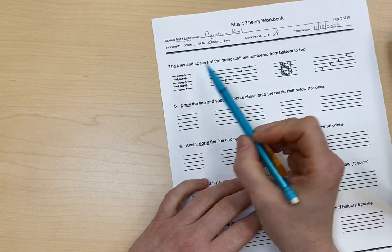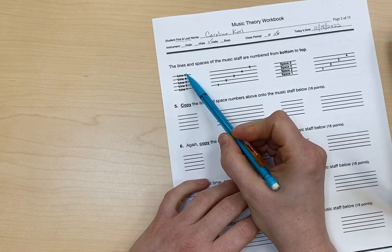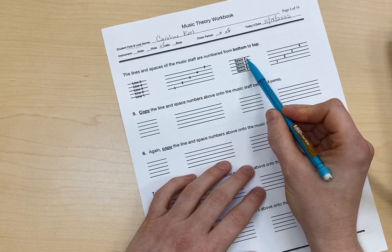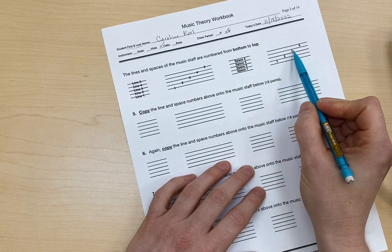We already talked about that. Line one, line two, line three, line four, line five, one, two, three, four, five, space one, space two, space three, space four, space one, two, three, four.